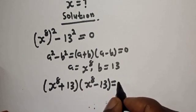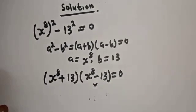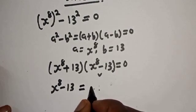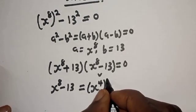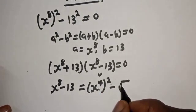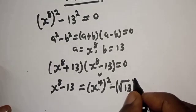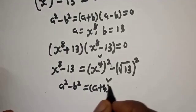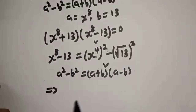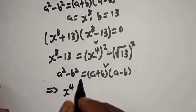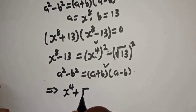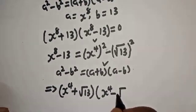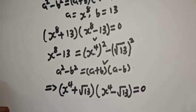So s raised to power 8 plus 13, bracket s raised to power 8 minus 13, is equal to 0. We can still express this further. s raised to power 8 minus 13 can also be written as s raised to power 4 squared minus square root of 13 squared. Applying a squared minus b squared equals a plus b bracket a minus b, this gives s raised to power 4 plus square root of 13 multiplied by s raised to power 4 minus square root of 13, equal to 0.